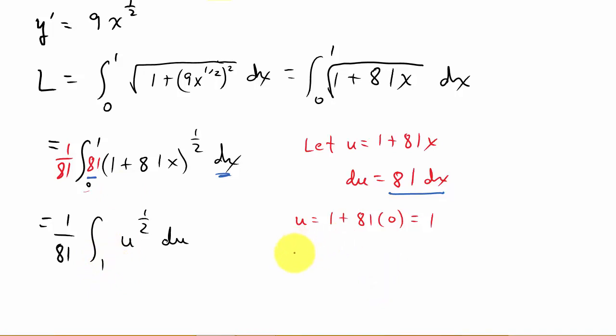And then for the next one, u equals 1 plus 81 times 1. Now I take the 1, plug it in for x. So that's going to give me 82. So my upper limit is going to be 82.